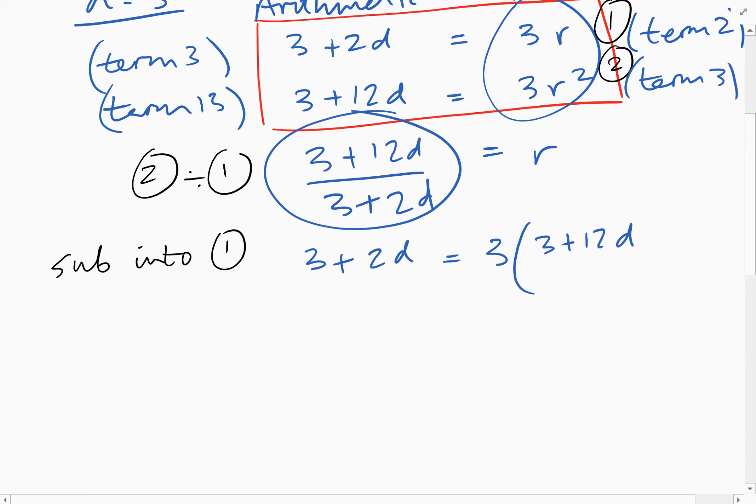And remember, this is the same as three over one. So when we multiply this out, we're going to do three times this and just multiply the bottom by one, so it'll stay as it is. So that will be 9 plus 36d all over 3 plus 2d.